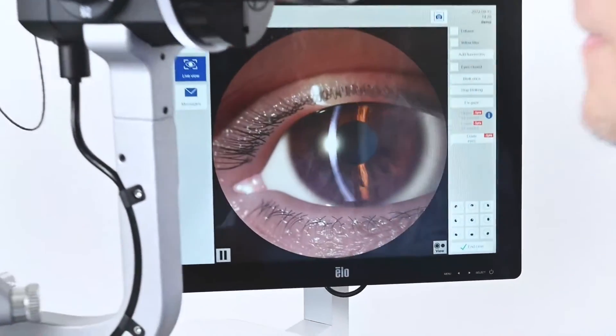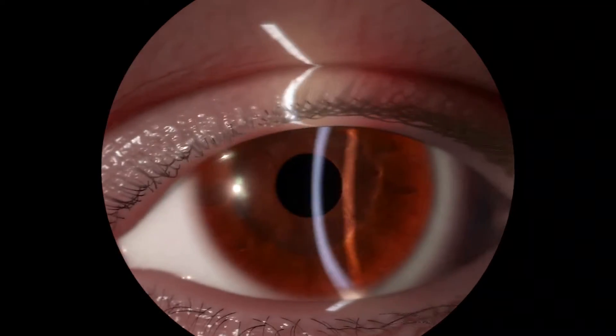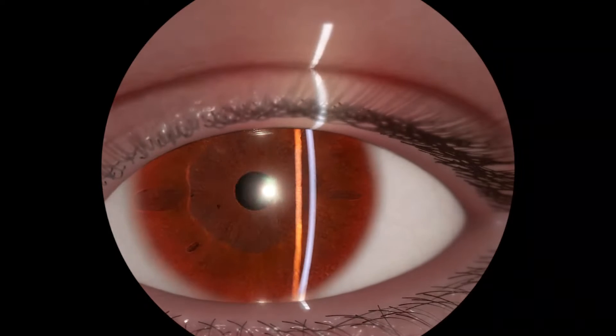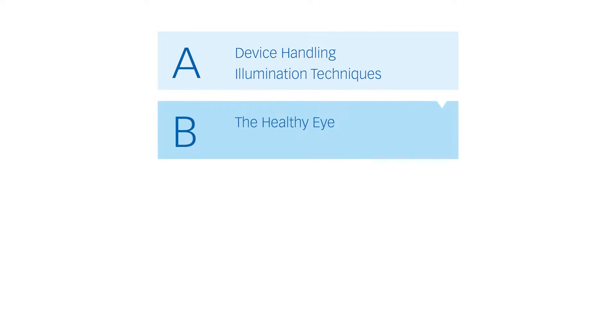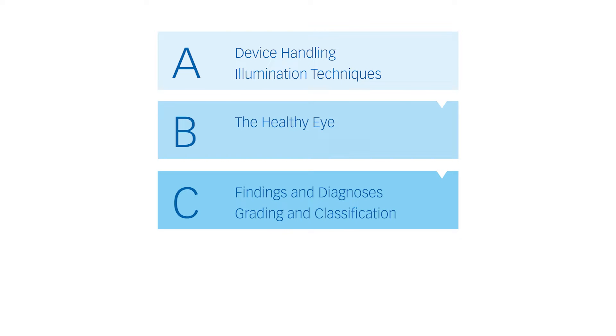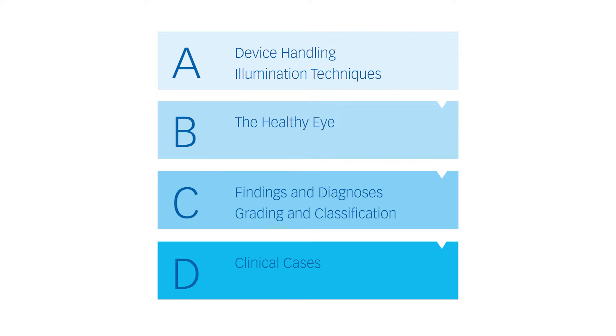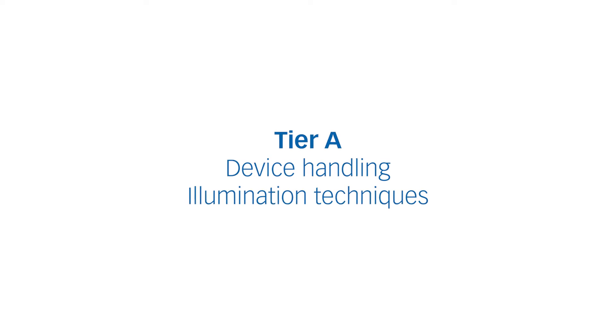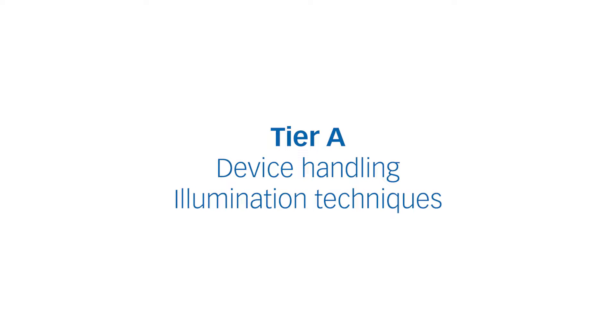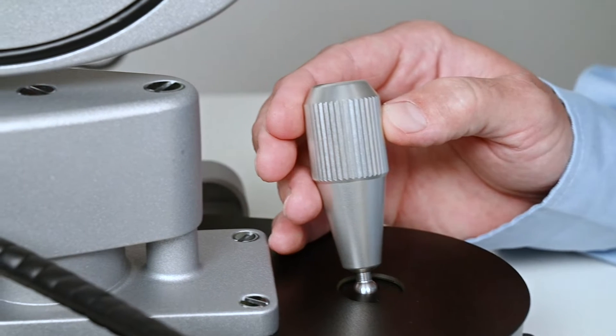The iSee Slitlamp Simulator offers profound and efficient training of examinations of the eye. The iSee Slitlamp curriculum breaks down the complex task of performing a slit lamp examination into training modules with increasing levels of difficulty. Trainees start with an introduction to basic device handling and illumination techniques. By means of gamified tasks, they train skills such as focusing the microscope, changing the illumination angle, or using filters.